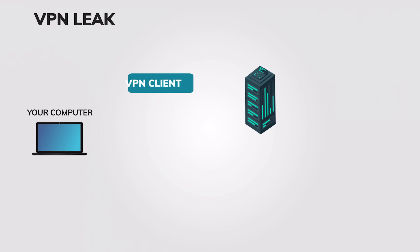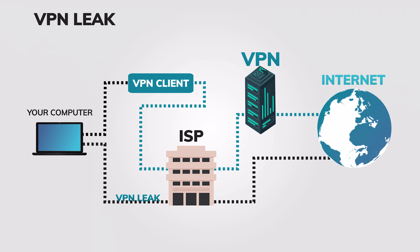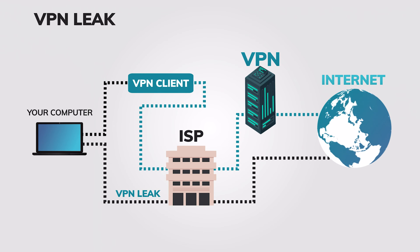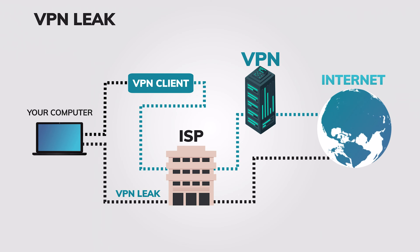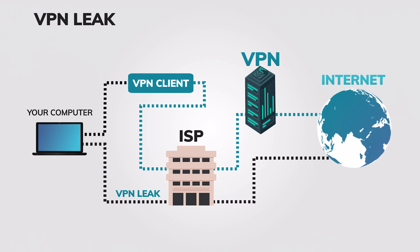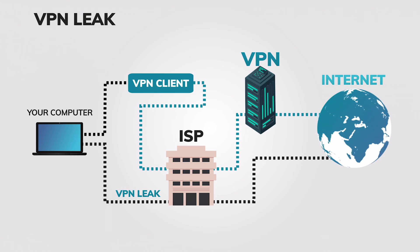Despite employing leading VPN solutions for privacy, your IP address and online activities might still be at risk, exposed through leaks originating not from your VPN itself, but from your browser or operating system. A VPN leak occurs when your actual IP address or DNS requests bypass the encrypted tunnel established by your VPN, thus revealing sensitive information to the ISP, advertisers, and potential attackers.